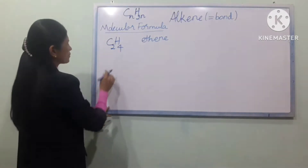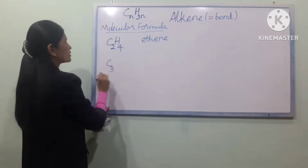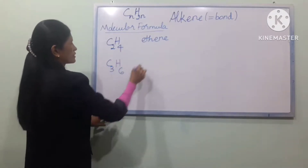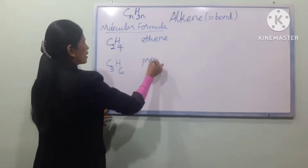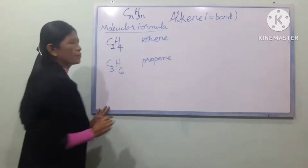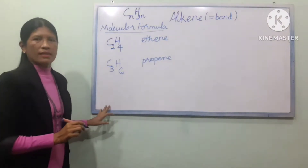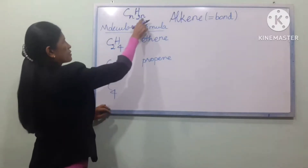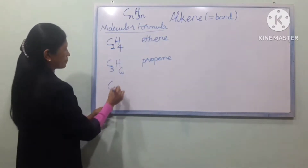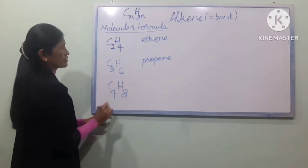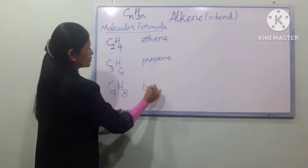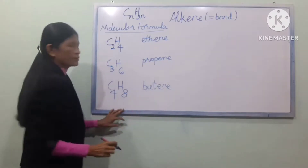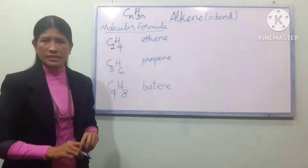For C3, we use C3H6. Now look at C4 — C4 gives us C4H8. The first name for C4 is BUT- (butene).